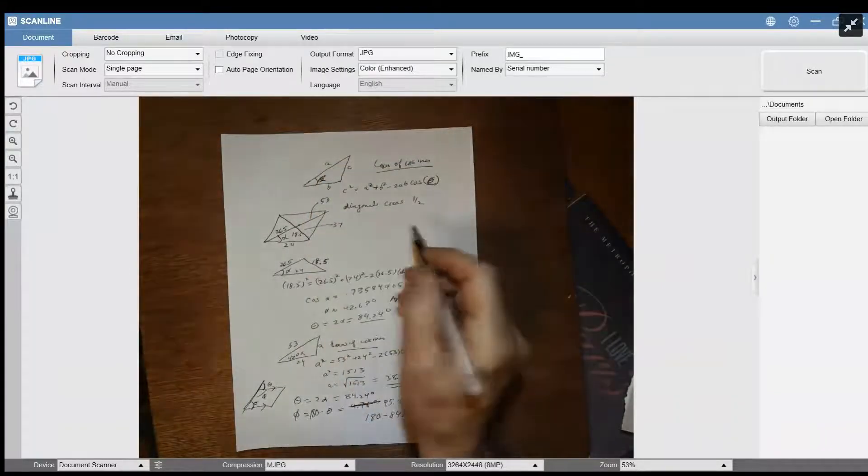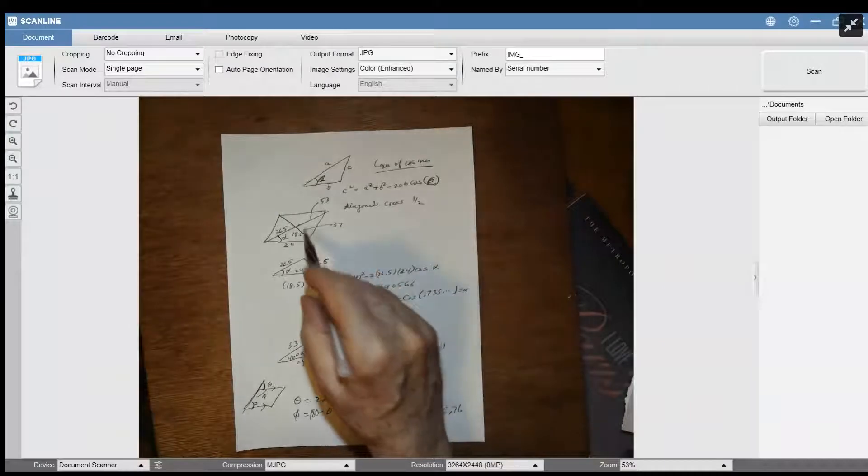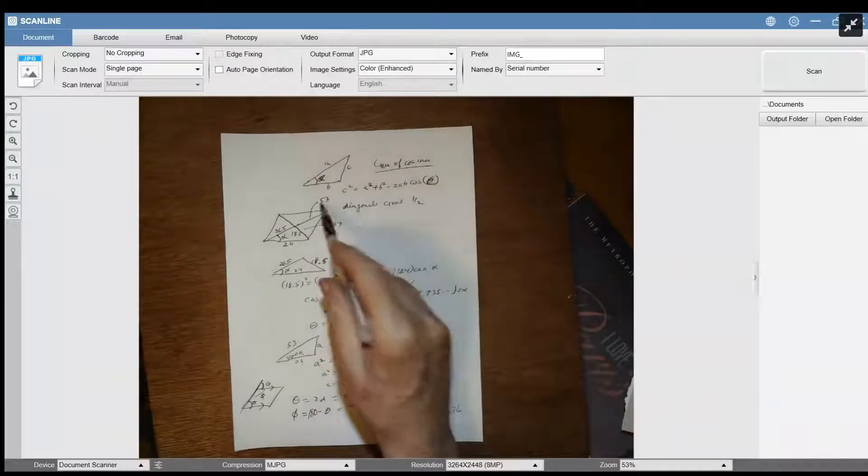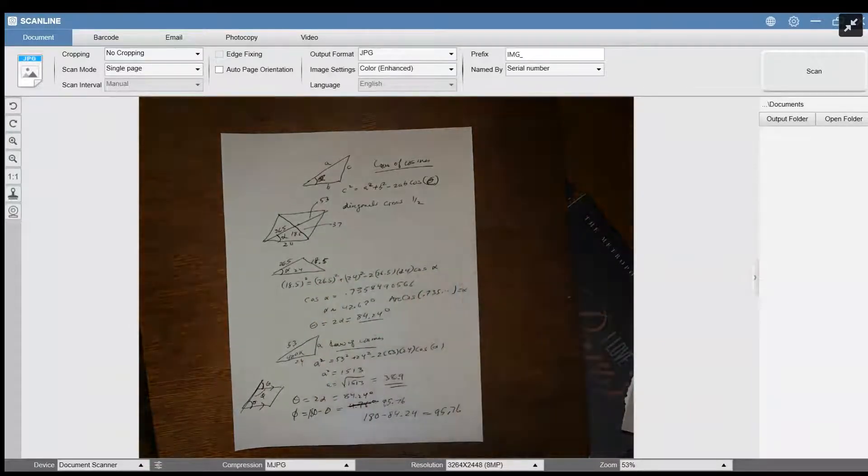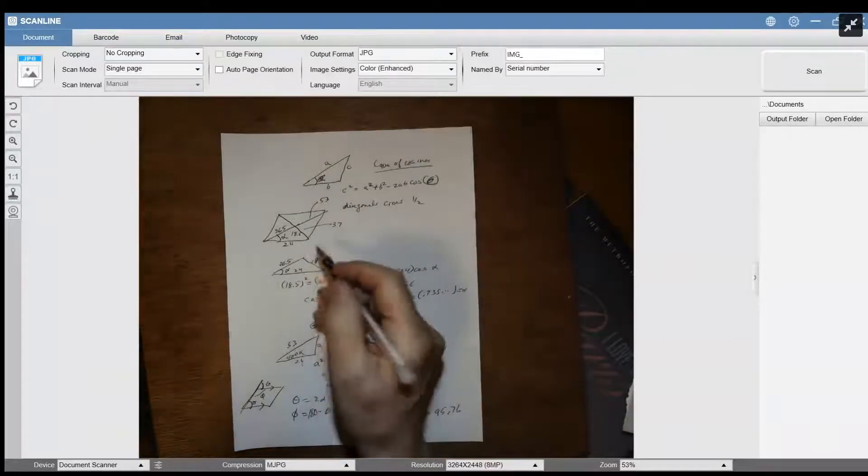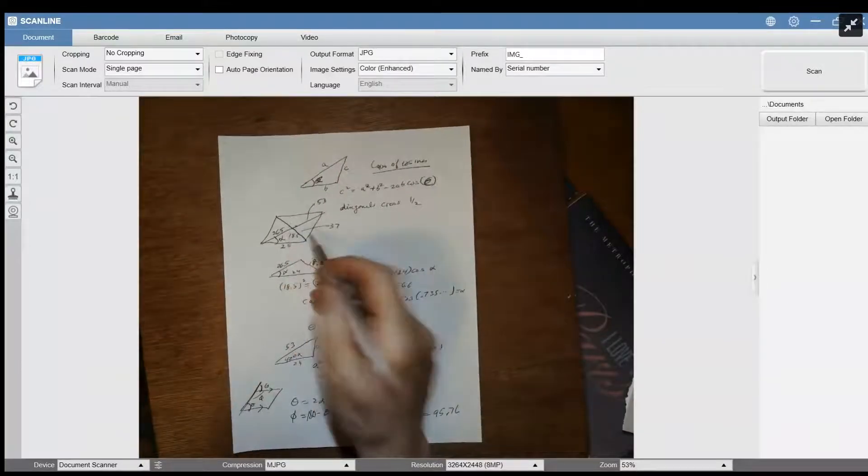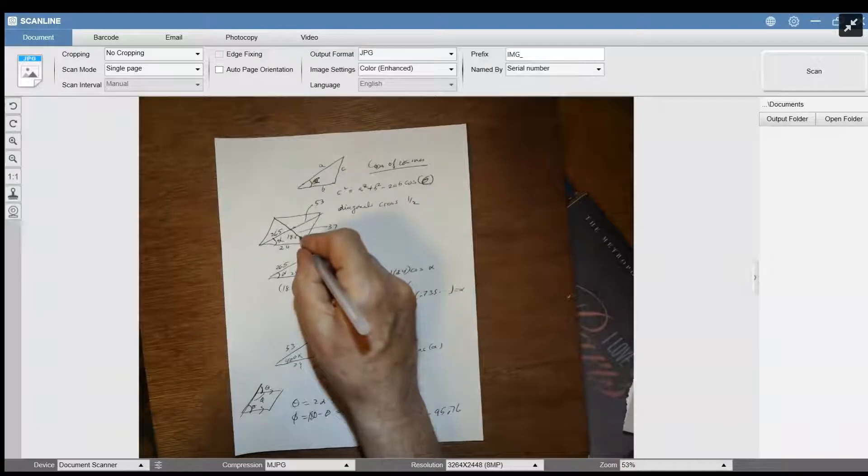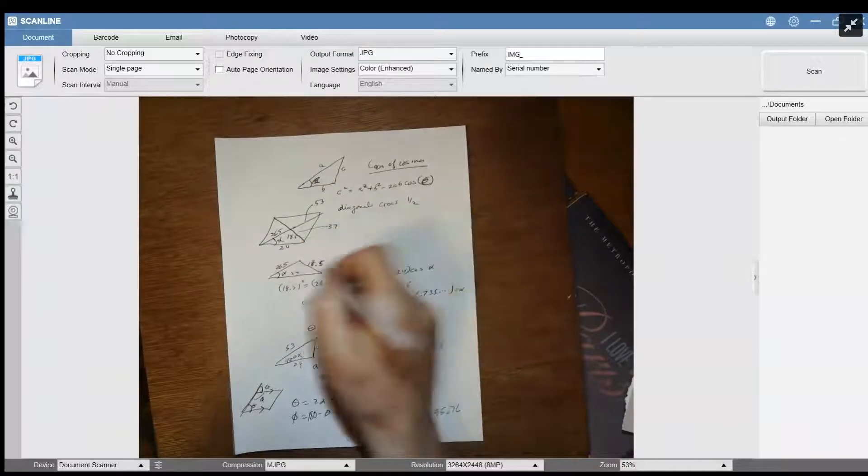So you have the diagonals, and you find out that half the diagonals are - one diagonal is 37, the other one is one half, so the lower triangle here is 26.5, and this here is 18.25. So that's your triangle.